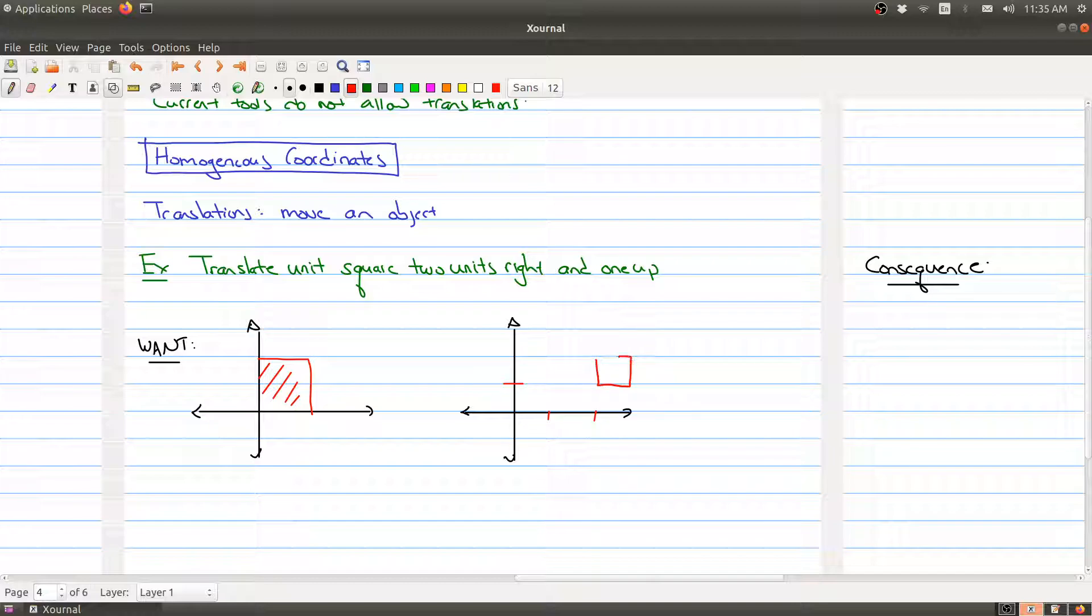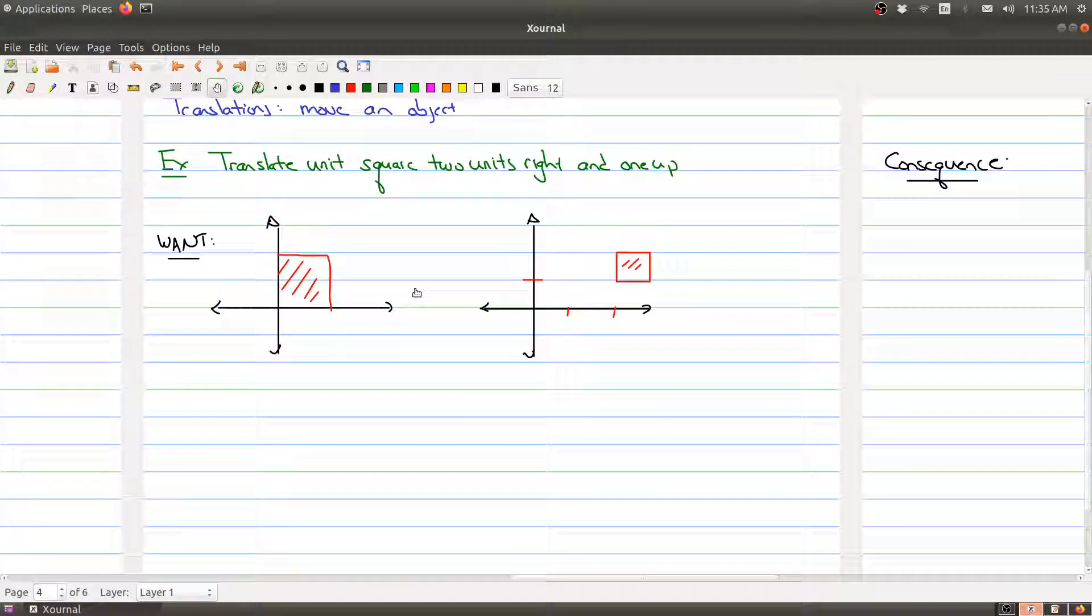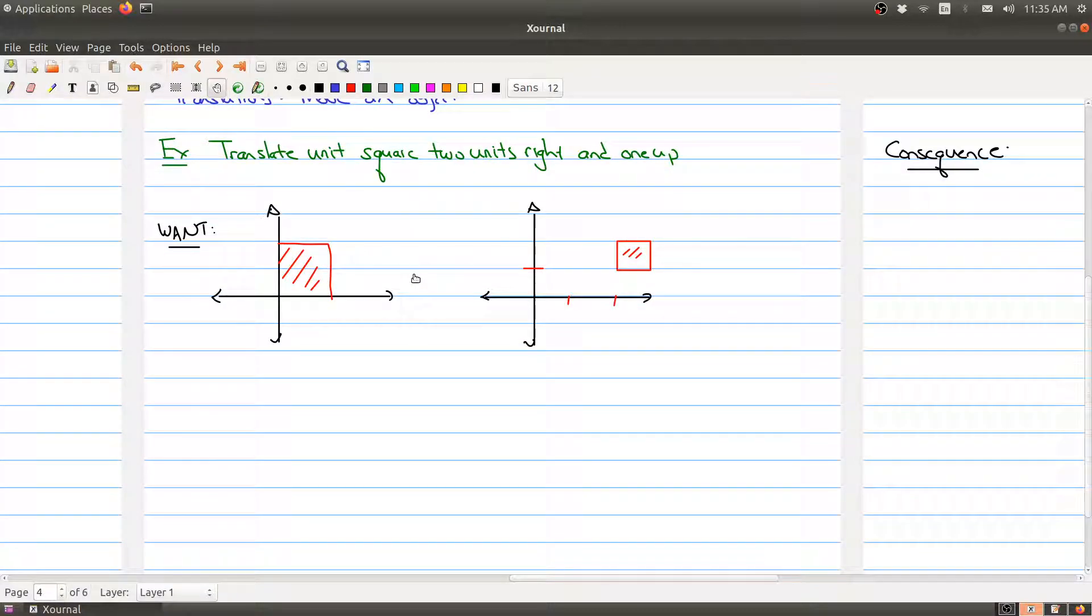So let's say here are two units and one unit up. We want to be able to move our square over into this position right here. Obviously you want to do this if you're playing some sort of video game or something of that nature. So how would we be able to take something like this and use linear algebra to manipulate computer graphics?